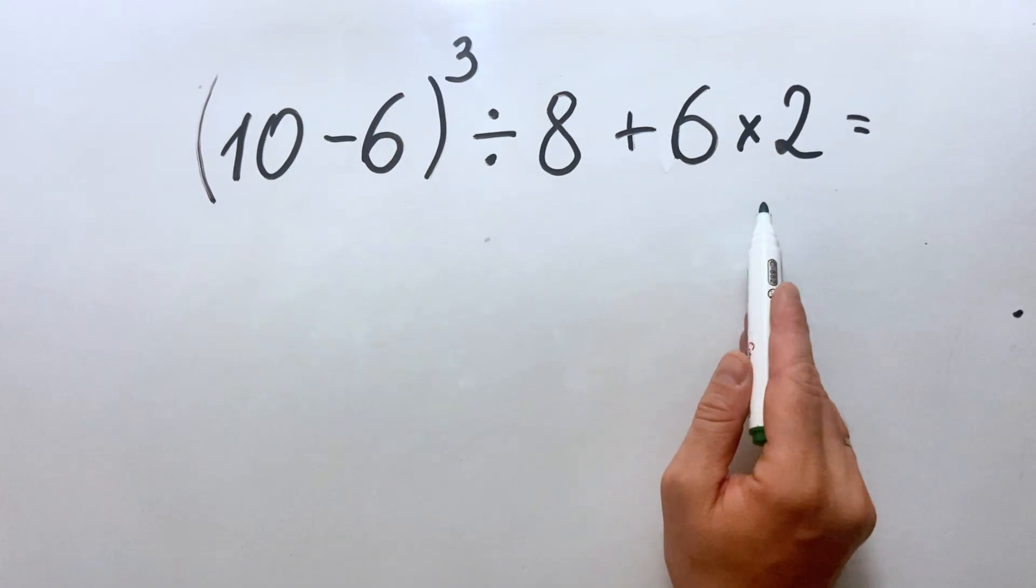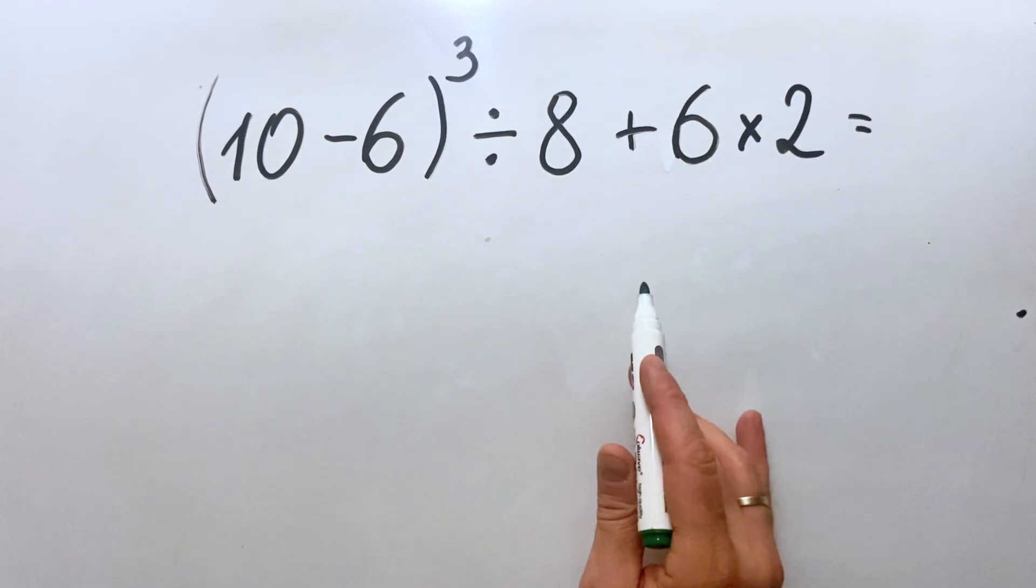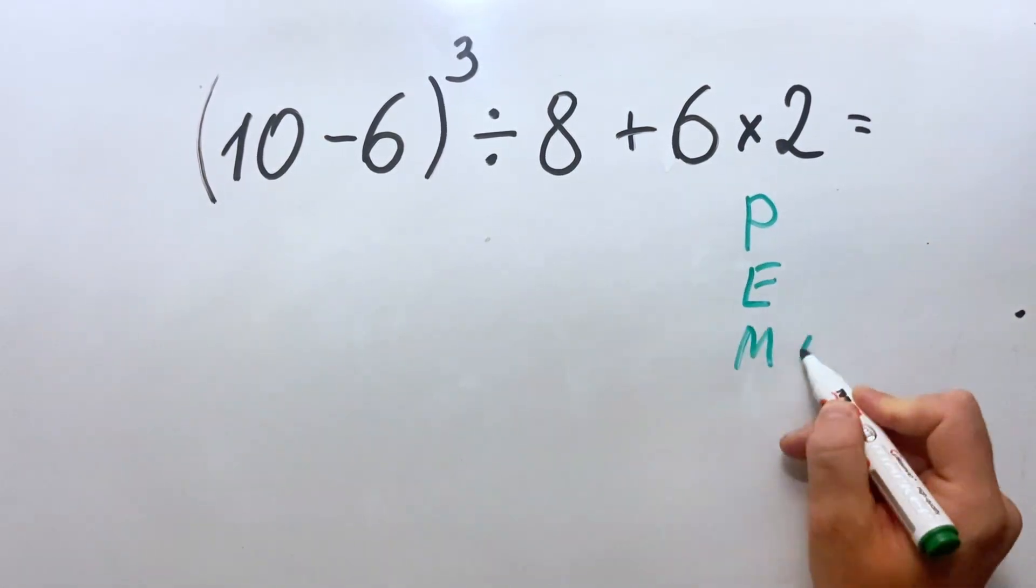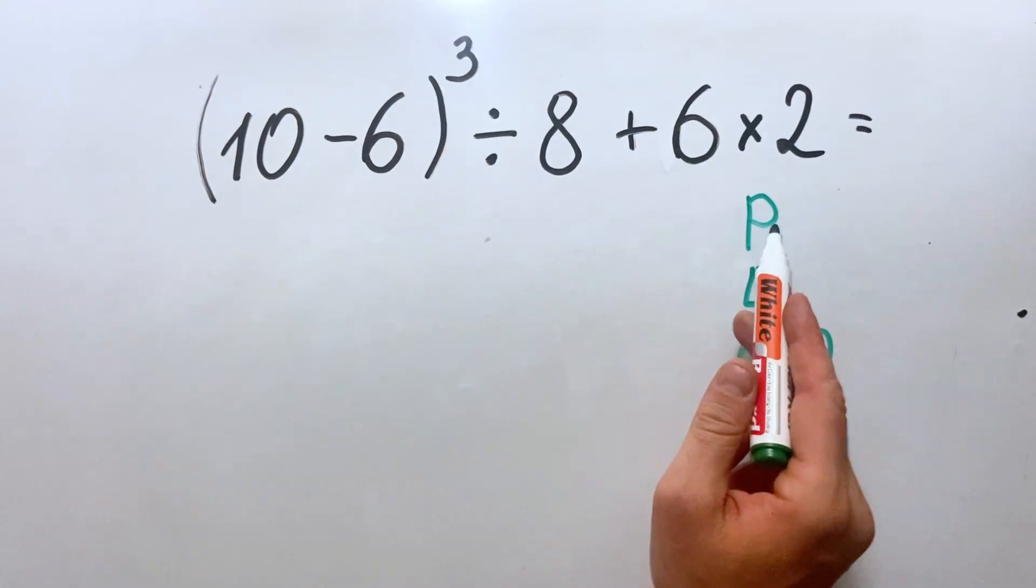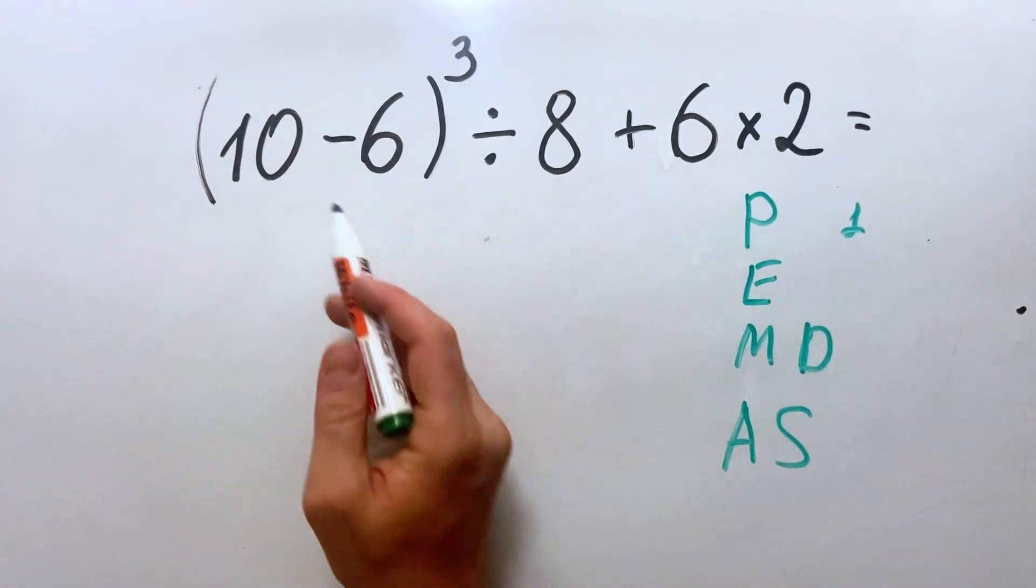This type of expression is the best example of how to use the order of operations, PEMDAS. We can see where P stands for parenthesis, and we must do it in the first place, so we have here parenthesis.